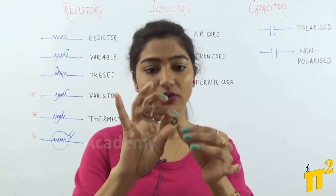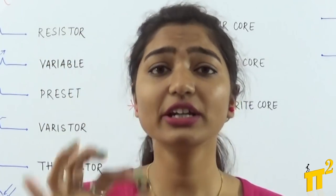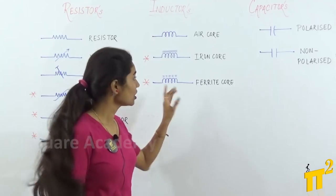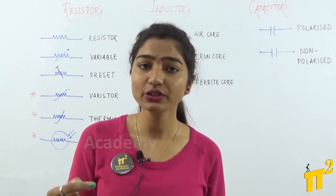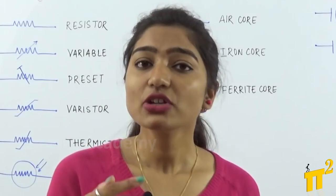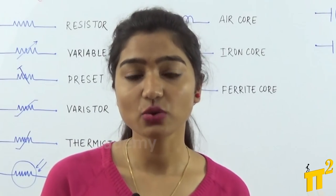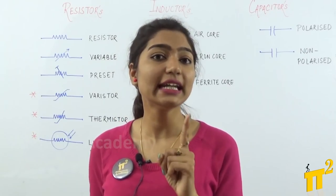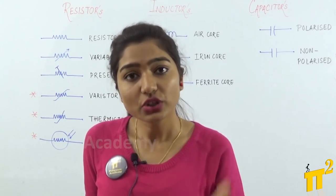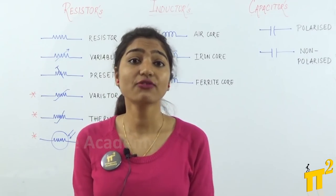This is how a ferrite core looks. Any coil wound on this ferrite core falls into the category of ferrite core inductors. Since ferrite cores have electrical discontinuity, they have very low eddy current losses. This means ferrite cores do not need laminations — we do laminations to reduce eddy current losses. Therefore ferrite cores find their applications for high frequencies, where eddy current losses are reduced.